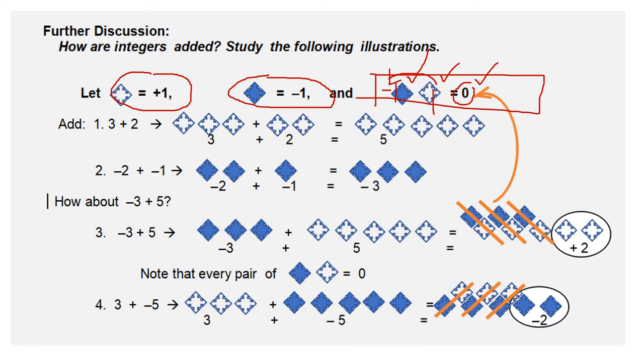For the first example, let us add positive three and positive two. We have positive three tiles, positive two tiles, which equals positive five.